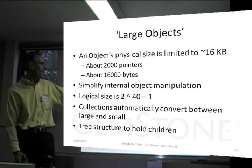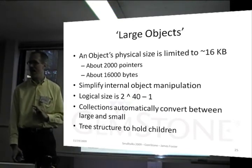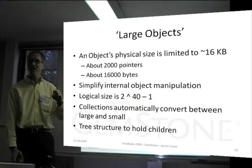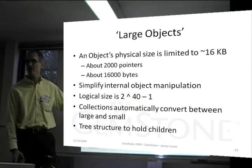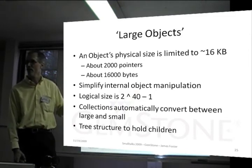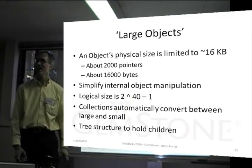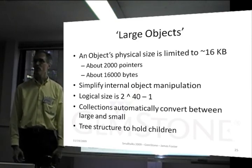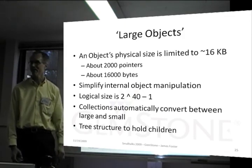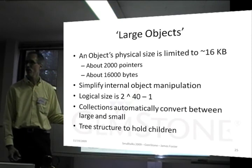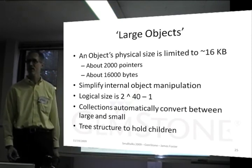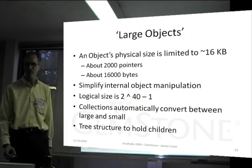If you had more than 2,000 objects in a collection — say 3,000 — that would be a header and two nodes: the first would have 2,000 elements, the second would have 1,000, giving you a total of 3,000. If you had 20,000 objects, you'd have 10 children each holding 2,000. We automatically manage the conversion between large and small; it's an internal implementation detail.